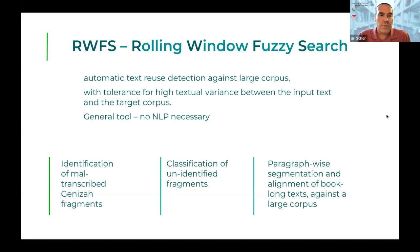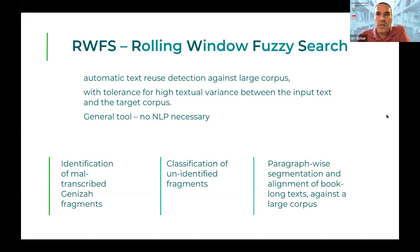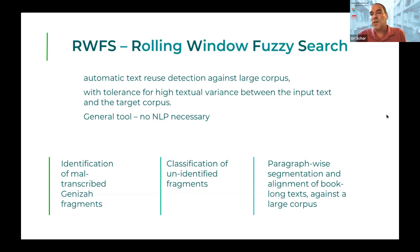We developed Rufus initially to identify, or to classify, if there is no clear identification, mal-transcribed Geniza fragments. These are very poor texts — both partial, fragmentary, and because of the low quality of the transcription, they had many other errors.